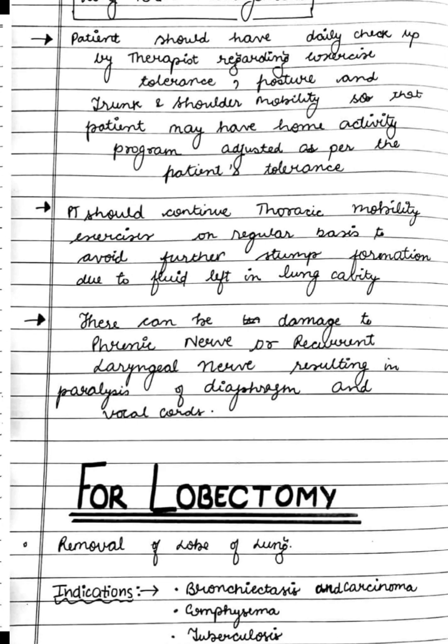There may be unavoidable damage in pneumonectomy to the phrenic nerve, which could result in paralysis of half of the diaphragm, or to the recurrent laryngeal nerve — a branch of the vagus nerve — which can result in inability to approximate the vocal cords. Both these complications impair respiration and coughing, so we need to check for these while giving treatment.